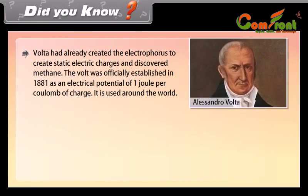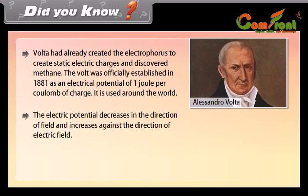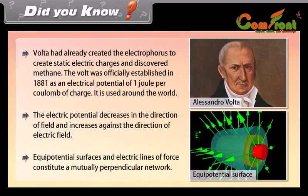Did you know? Volta had already created the electrophorus to generate static electric charges and discovered methane. The volt was officially established in 1881 as an electrical potential of 1 joule per coulomb of charge, and is used around the world. The electric potential decreases in the direction of the field and increases against the direction of the electric field. Equipotential surfaces and electric lines of force constitute a mutually perpendicular network.